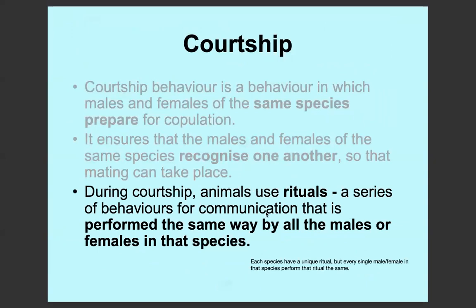Animals often use rituals for courtship. A ritual is a series of behaviours for communication that is performed in the same way by all the males or females in that species. Each species has a unique ritual. For example, a fish eagle may have a different ritual to a tawny eagle — even though they're very similar birds, they're different species. Within a species, all the male fish eagles will play one role in the ritual and all the female fish eagles a different role, but they will all do the same ritual.